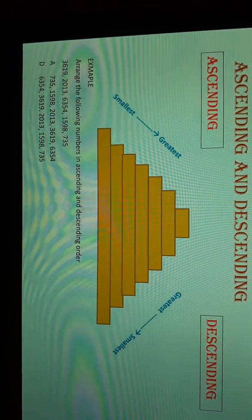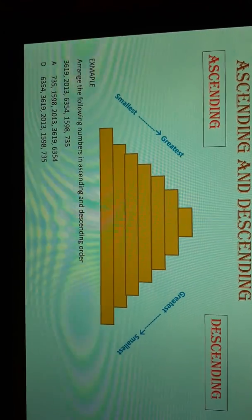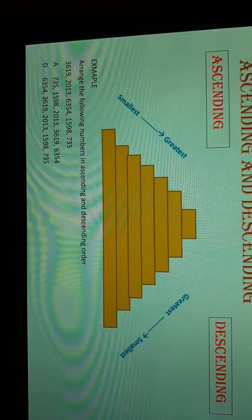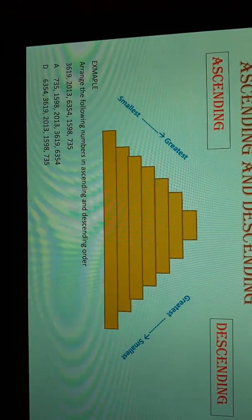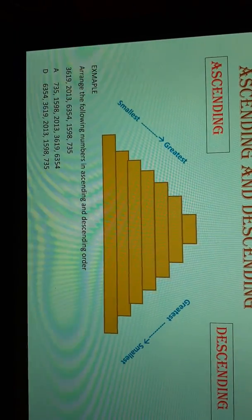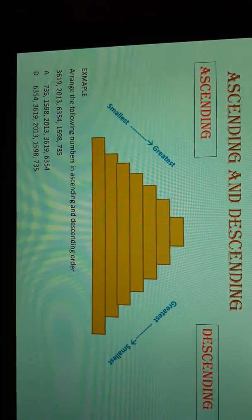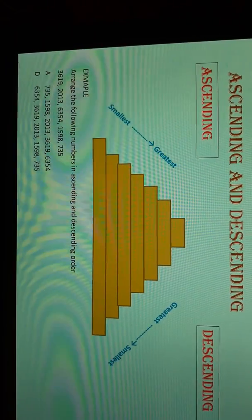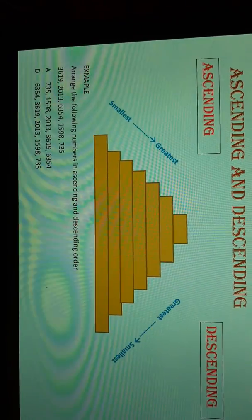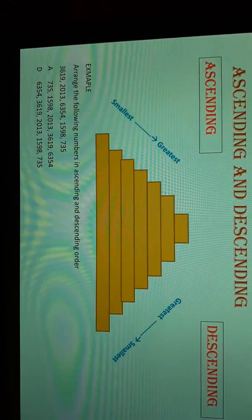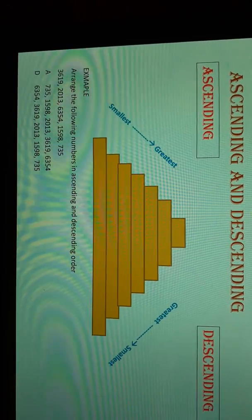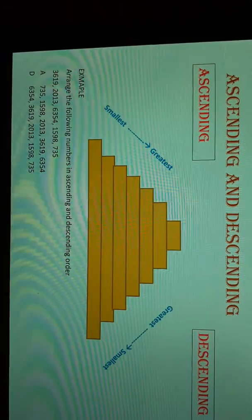To write these numbers in descending order, we first see the greatest number: 6354, then 3619, then 2013, then 1598, and the last smallest number, 735. This was your ascending and descending order.